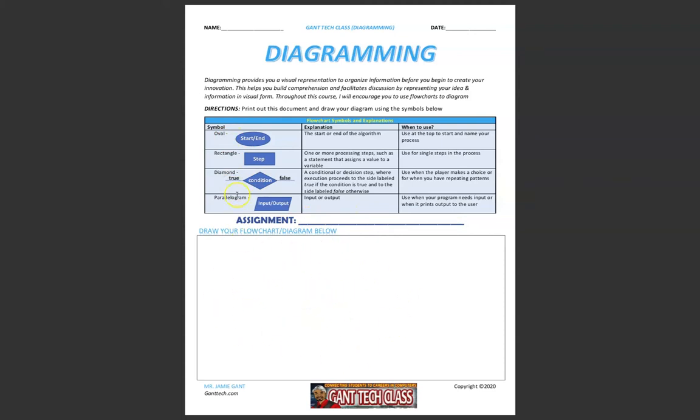Once you print this out, you would use an oval for the starting of your program, a rectangle for a step in your program, a diamond for a condition if something was true or false, and a parallelogram for input or output.